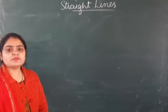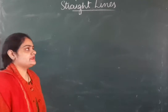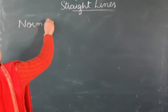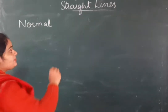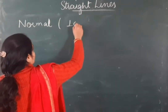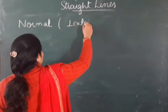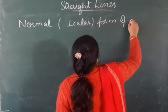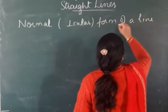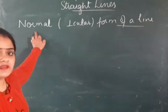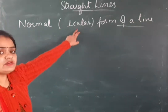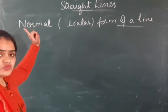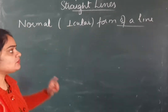Let's do another topic which is the normal form of a line. 'Normal' means perpendicular line. Another word for perpendicular line is 'normal'. So whenever a perpendicular line is drawn to a given line, we call it the normal to that line.